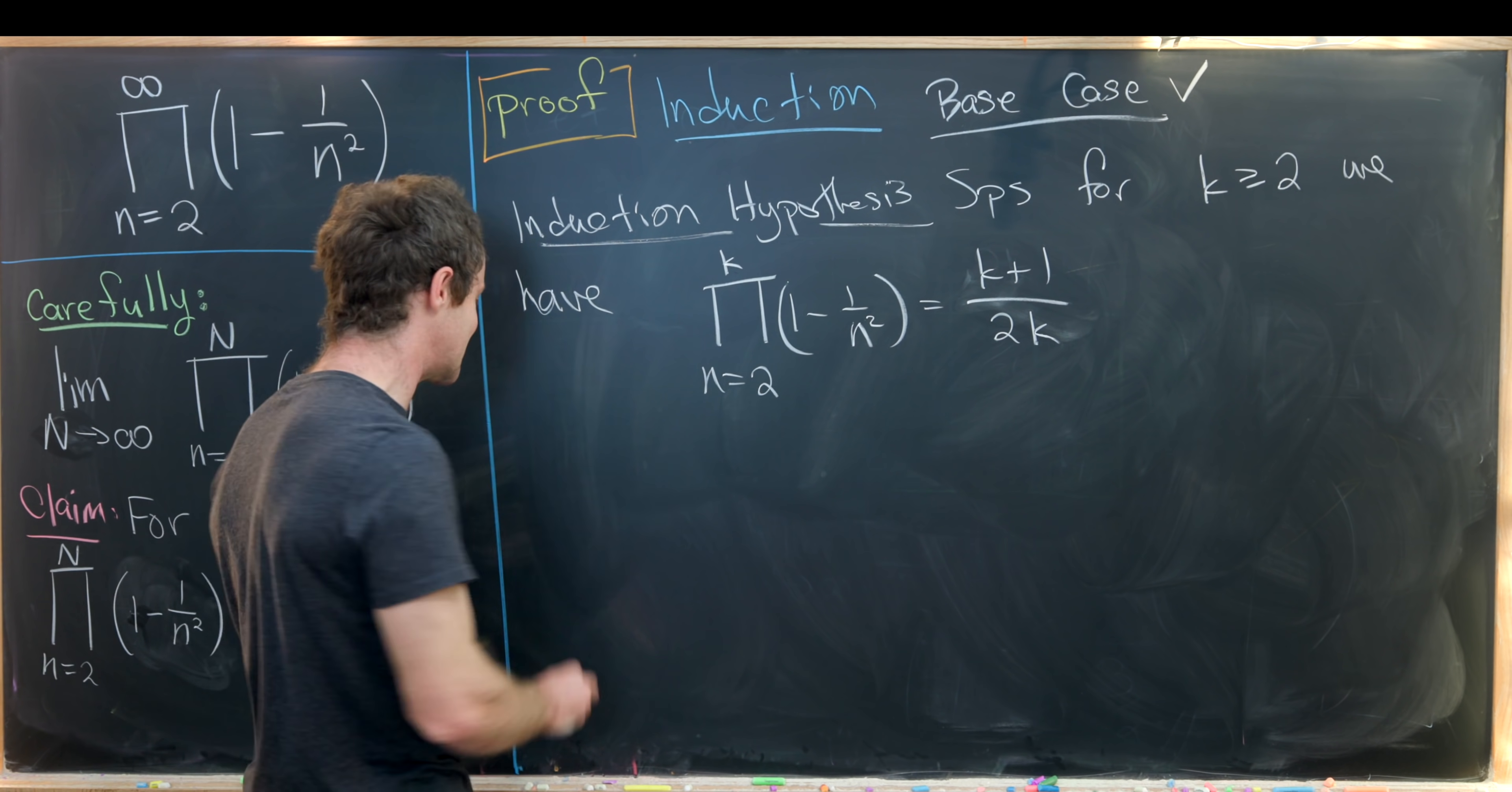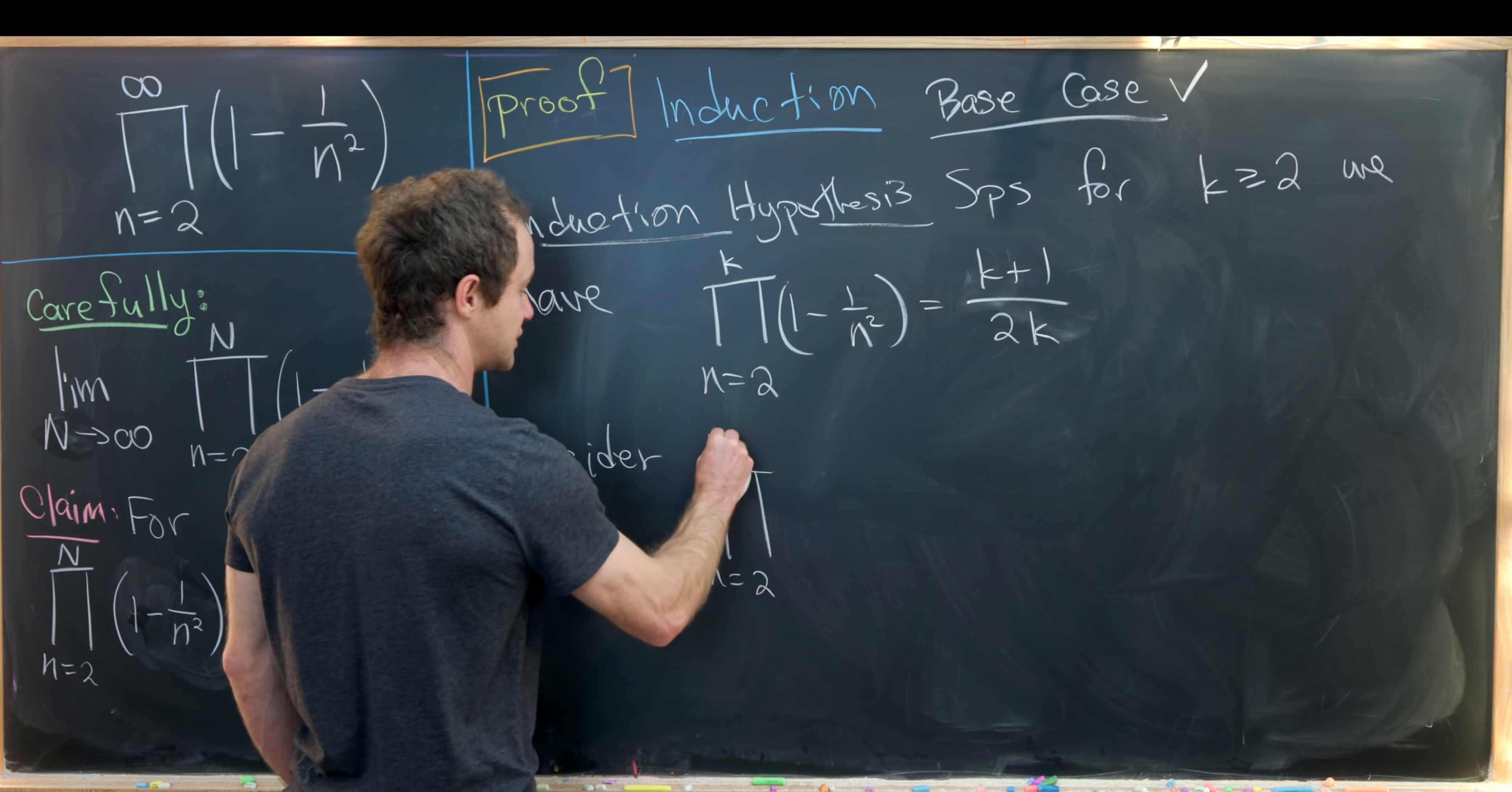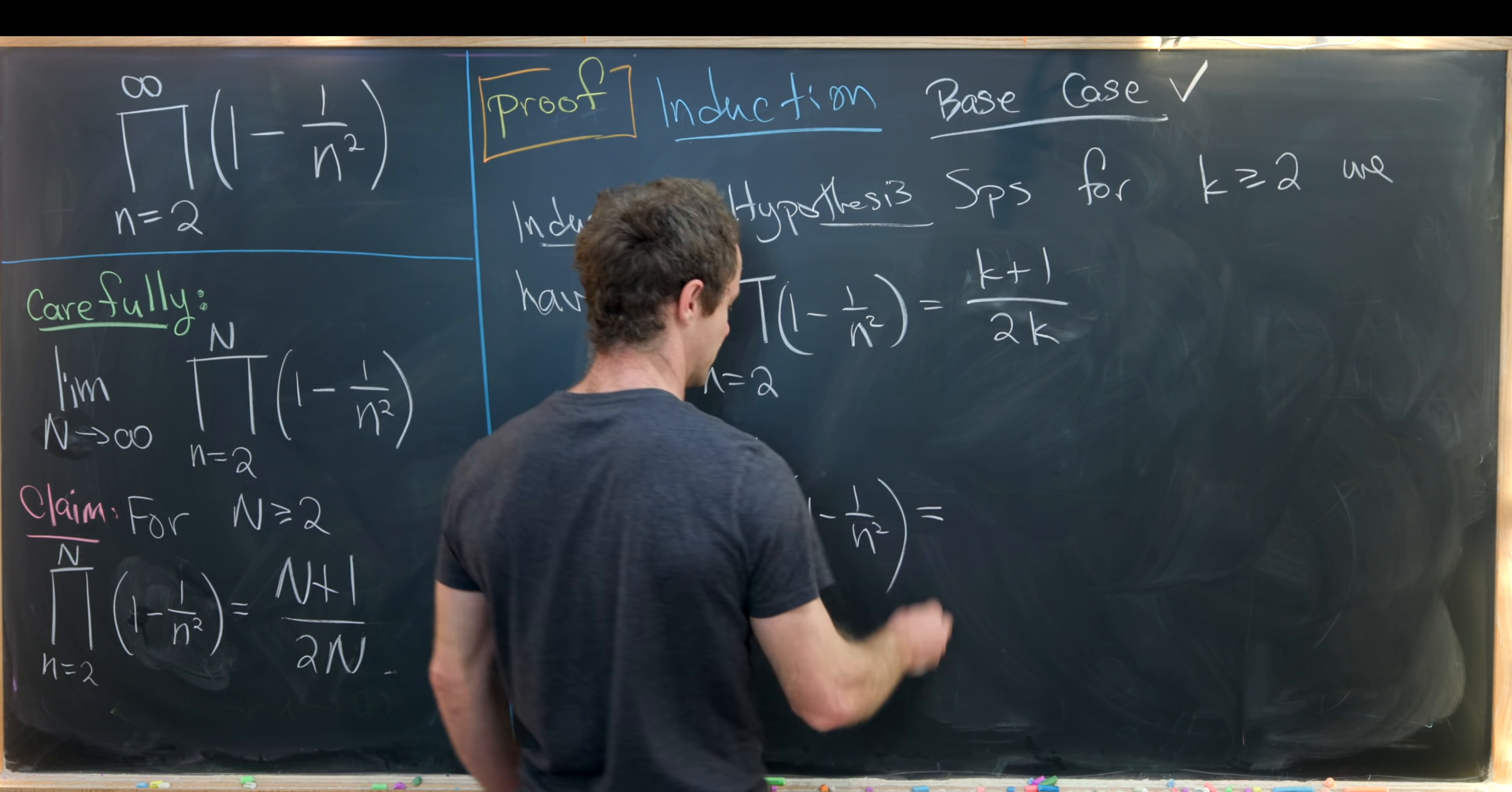Okay, but now let's consider the next partial product. So the next partial product will be the product as n goes from 2 up to k plus 1 of 1 minus 1 over n squared.